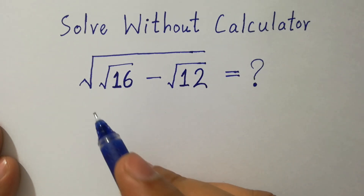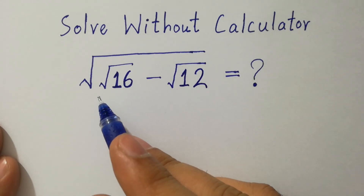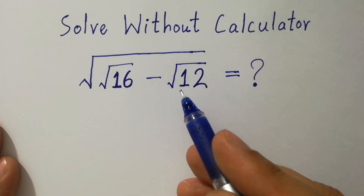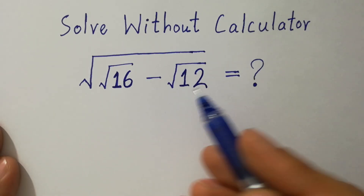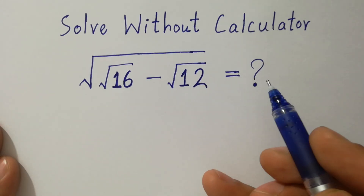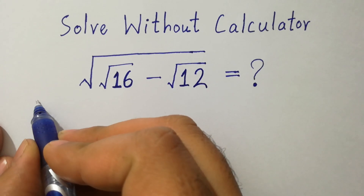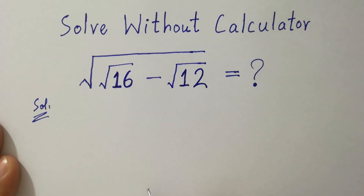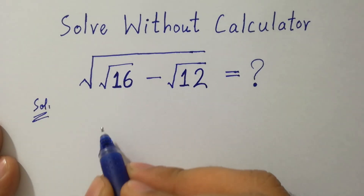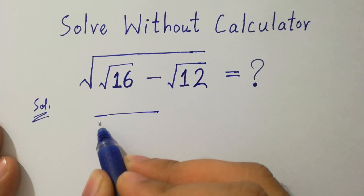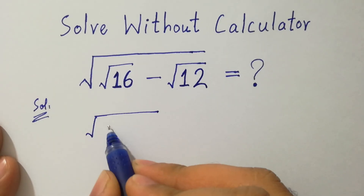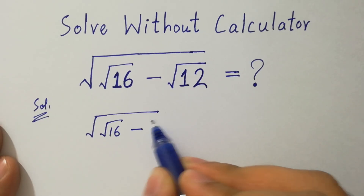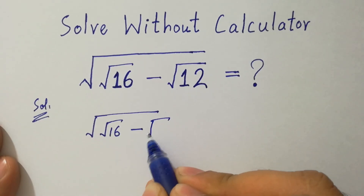Hello friends. We have a problem: the whole square root of square root of 16 minus square root of 12. What does this equal? Let's find a solution.